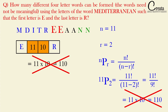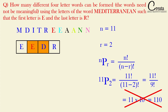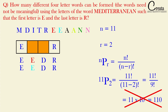Why is 11 × 10 wrong? Because E, A, and N each repeat twice. For example, taking the first E in slot one and D in slot two gives 'EEDR'; taking the second E in slot one and D in slot two also gives 'EEDR' — the same word. So using two different E's produces the same output, meaning we get overlapping arrangements. This approach creates duplicates and is therefore invalid.